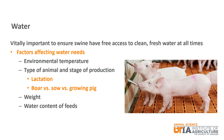It should be noted that there are several factors that can affect the water needs. Typically, the higher the environmental temperature, the more water an animal will need. The type of animal and stage of production can also have a dramatic effect on water needs. A lactating sow will definitely have an increased water requirement. Heavier animals also require more water. Finally, the water content of feeds can affect water needs.